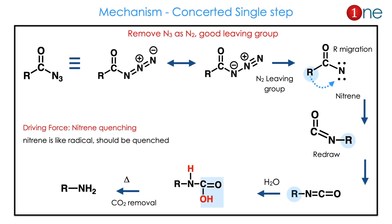Write the azide with charges, then remove the N2 by heat — you have nitrogen formation. To quench the nitrogen, or migrate, you have isocyanate formation. Finally, water attacks and CO2 is removed — you have the amine.